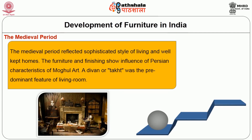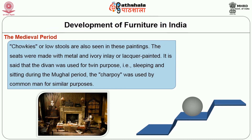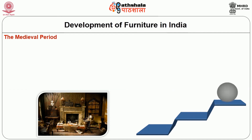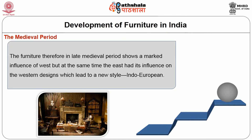The medieval period reflected a sophisticated style of living and well-kept homes. The furniture and furnishings show the influence of Persian characteristics of Mughal art. A diwan or divan was the predominant feature of the living room; chaukis or low stools are also seen in paintings. The seats were made with metal and ivory inlay or lacquer painted. The diwan was used for the twin purpose of sleeping and sitting. During the Mughal period, the charpoy was used by the common man for similar purposes. The furniture of the late medieval period shows a marked influence of the West, but at the same time the East influenced Western designs, which led to a new style: Indo-European.